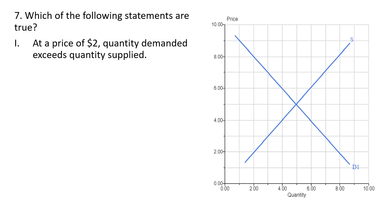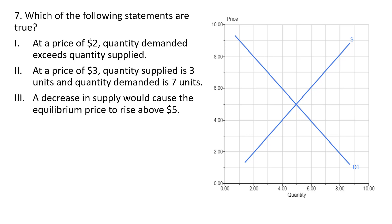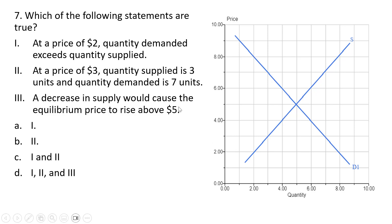Which of the following statements are true? Statement 1: at a price of $2, quantity demanded exceeds quantity supplied. This $2 is below the equilibrium price, so yes — quantity demanded here would be 8, and that exceeds the quantity supplied of 2, so that is correct. Statement 2: at a price of $3, quantity supplied is 3 units and the quantity demanded is 7 units. Statement 2 is correct.